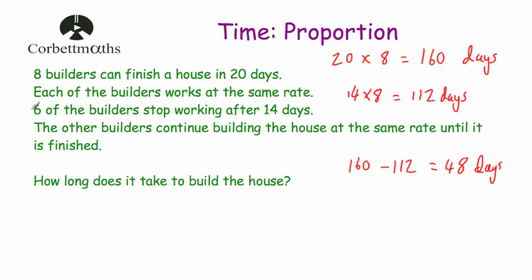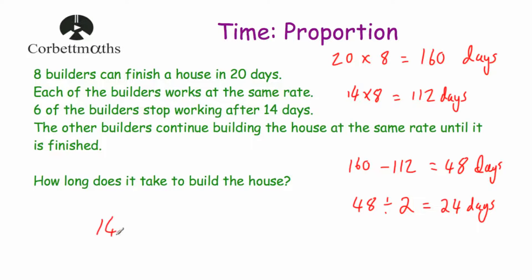Now let's see how many builders are working on the house after 14 days. 6 of the builders stopped working, so there were 8 builders to begin with and 6 stopped, leaving only 2 builders. They've got to spend 48 days worth of work in total, so if we take 48 and divide it by 2, that's 24 days. So 8 builders spent 14 days, plus 2 builders take another 24 days, giving us 14 plus 24 equal to 38 days to build the house altogether.